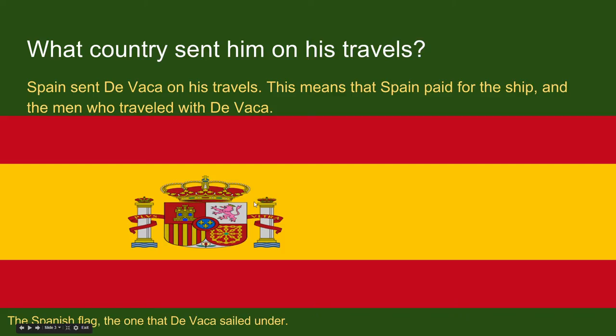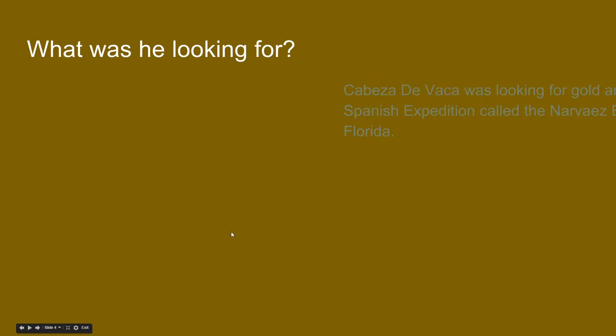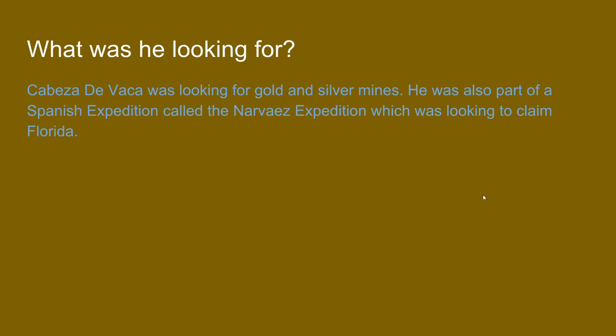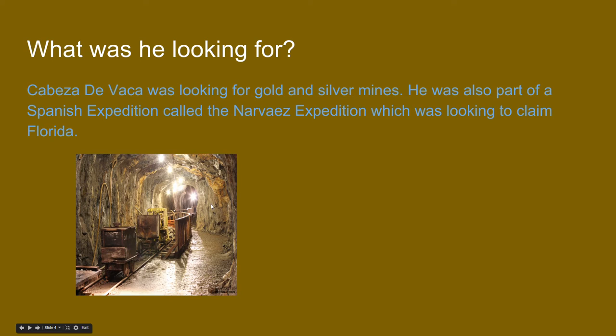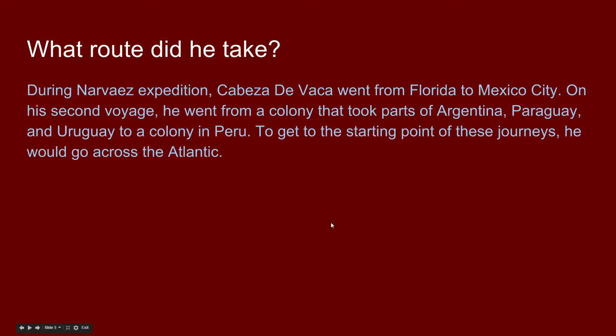What exactly was he looking for? He was looking for gold and silver mines — basically riches. He was also part of a famous Spanish expedition called the Narvaez Expedition, which was supposed to claim Florida. It turned out to be a complete disaster, and Cabeza de Vaca was one of only about four people left by the time they reached Mexico City.